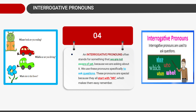Next is interrogative pronouns. Interrogative pronouns stand for something we are not yet aware of — we don't know the answer because we are asking about it. We use these pronouns specially to ask questions. These pronouns start with 'wh', making them easy to remember: what, who, which, whom. Examples: 'Whose book are you reading?' — whose is the interrogative pronoun. 'Which car are you driving?' — which is the interrogative pronoun. 'What color is this flower?' — what is the interrogative pronoun.